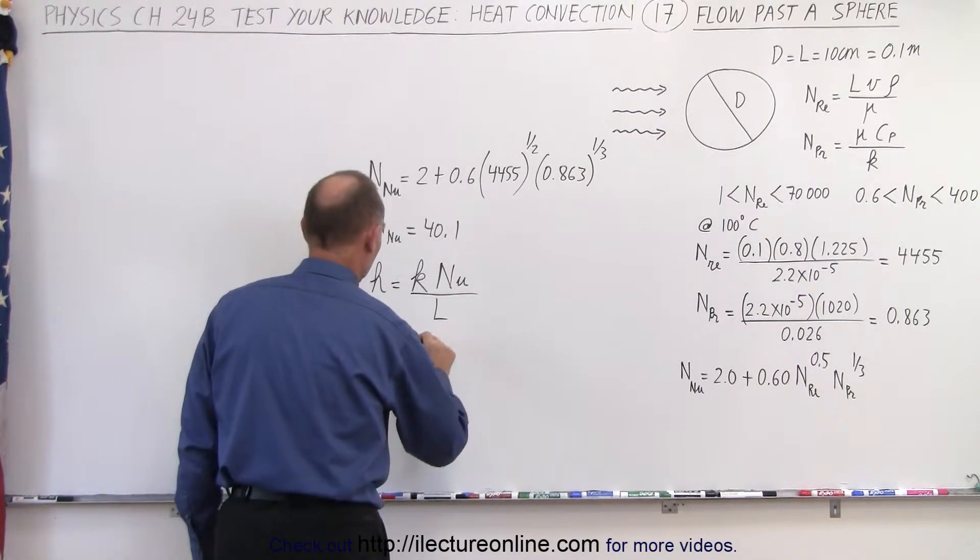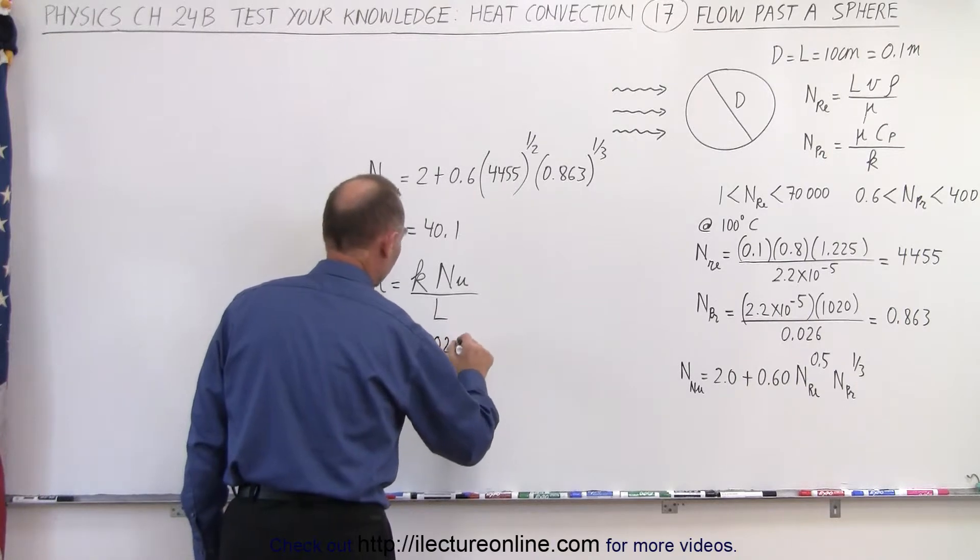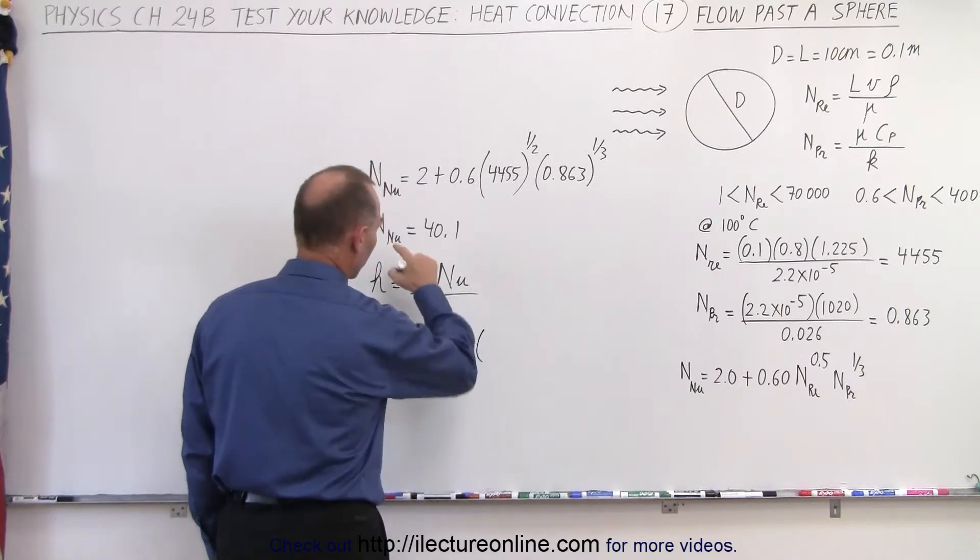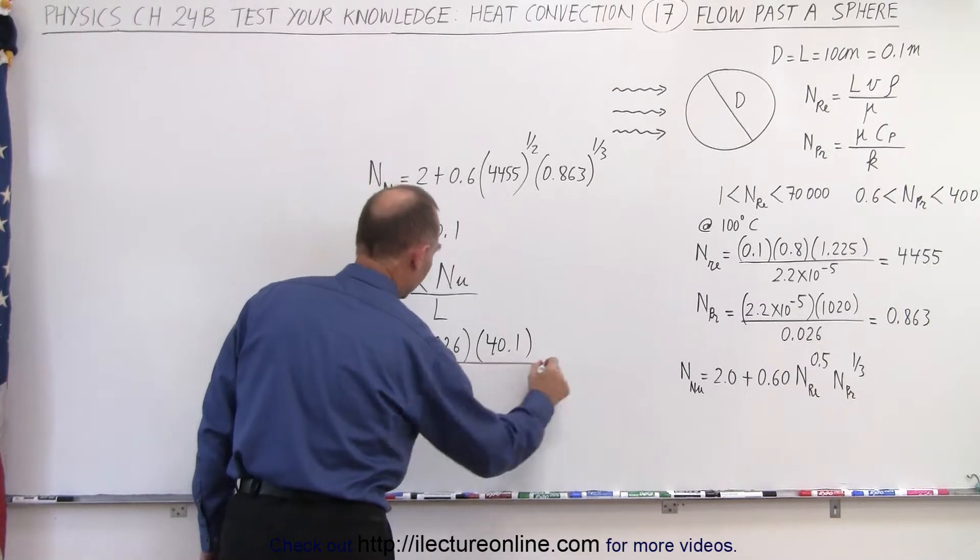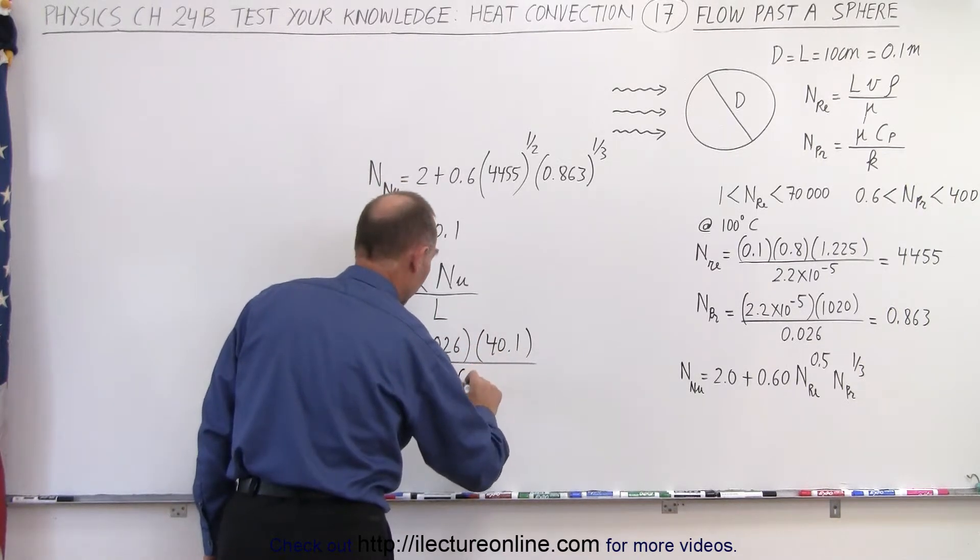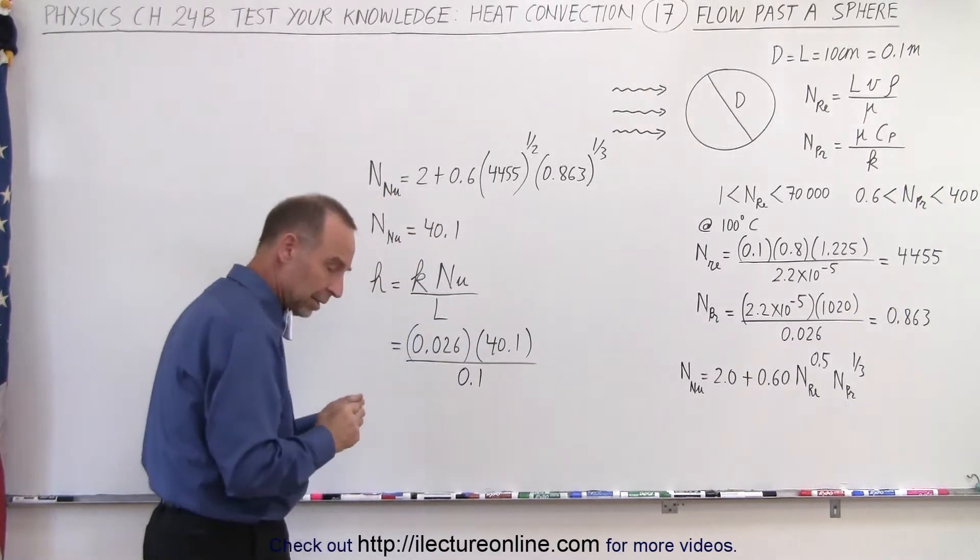So this is equal to 0.026 for air. The Nusselt number we just calculated, and we divide it by the characteristic length. In this case would be 10 centimeters or 0.1 meter.